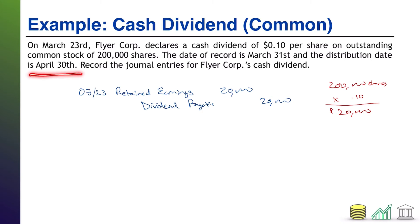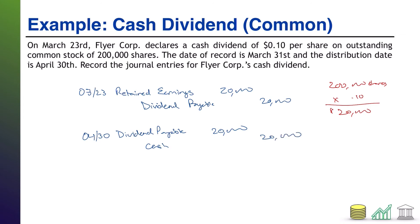The distribution date is April 30th — that's the day we pay off our obligation. When we pay off a liability, you debit the liability, which is dividends payable, $20,000. We are paying it out in cash, so credit cash $20,000. This problem did not mention any preferred shareholders or any owed dividends to preferred shareholders, so we can assume that entire $20,000 is going to our common shareholders.